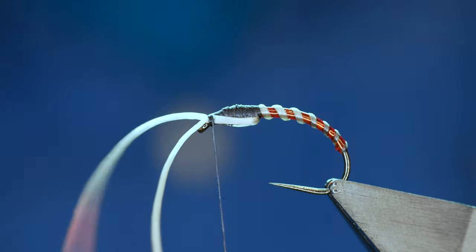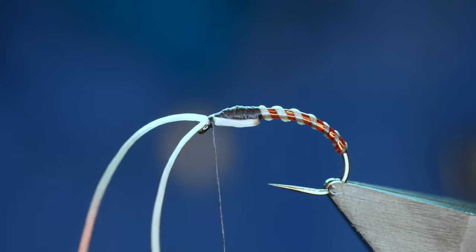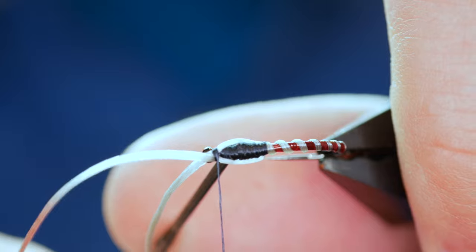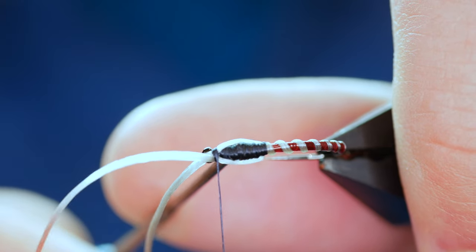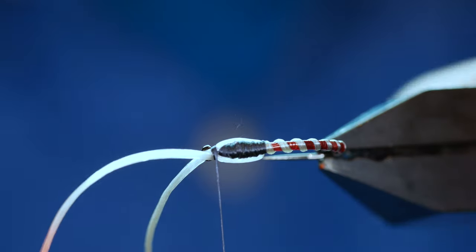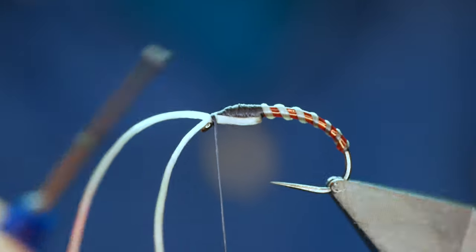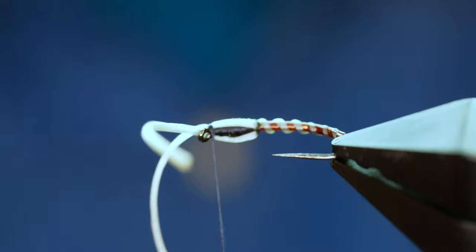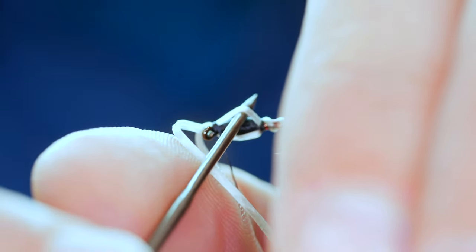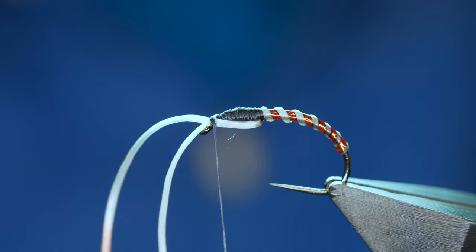Now what I want to do next is just open out them buds a bit and I'm going to use a dubbing needle on either side. This is not the simplest fly to tie by any stretch, but I do think it's worth the effort. If they're particularly locked on to a particular buzzer that's hatching, then you can do worse than use this pattern.